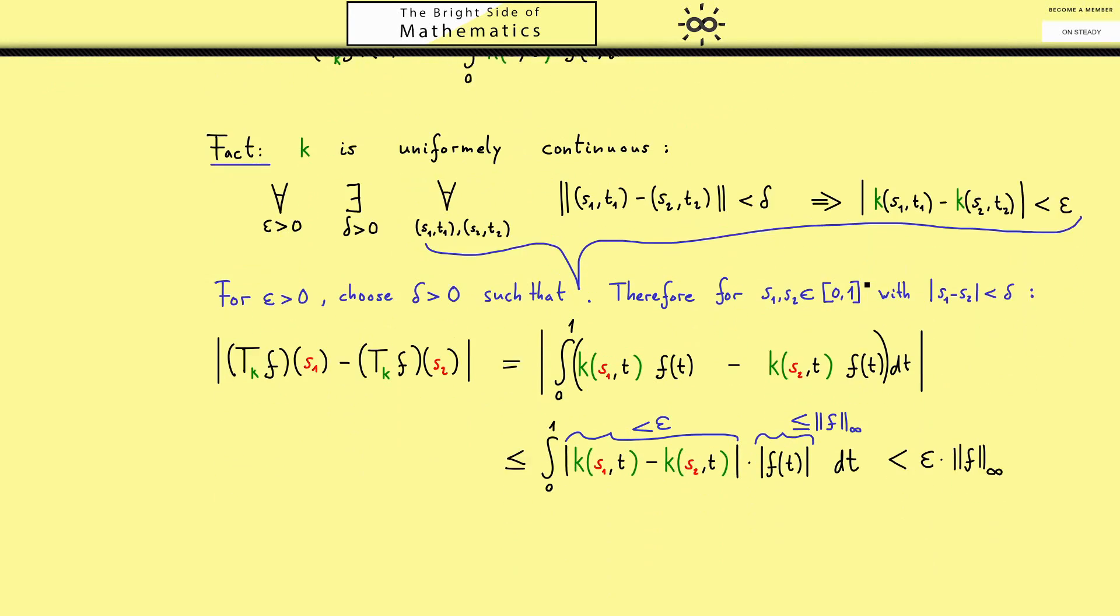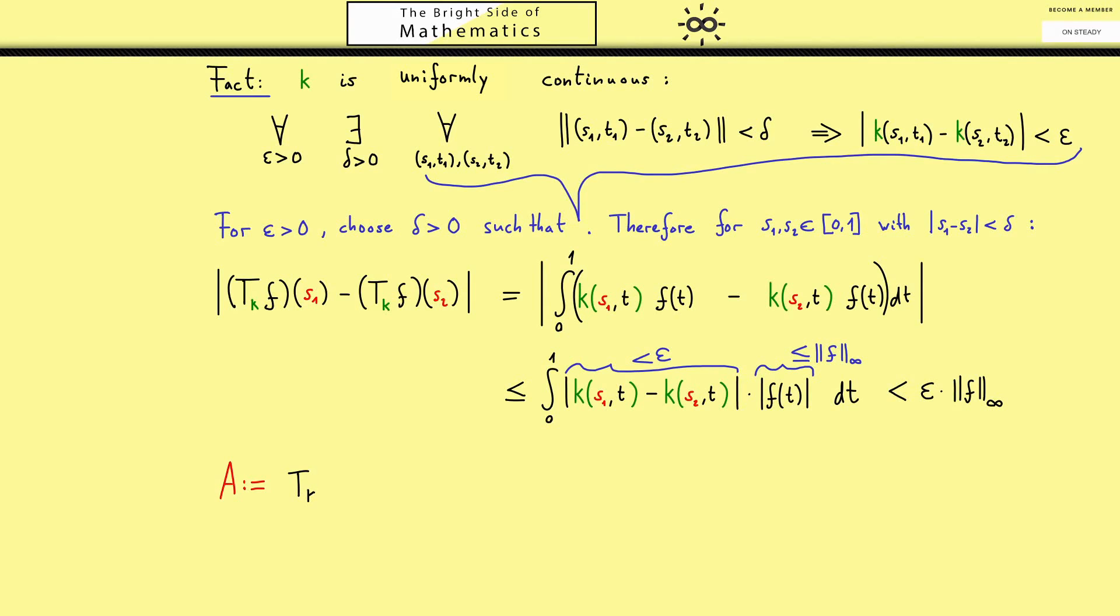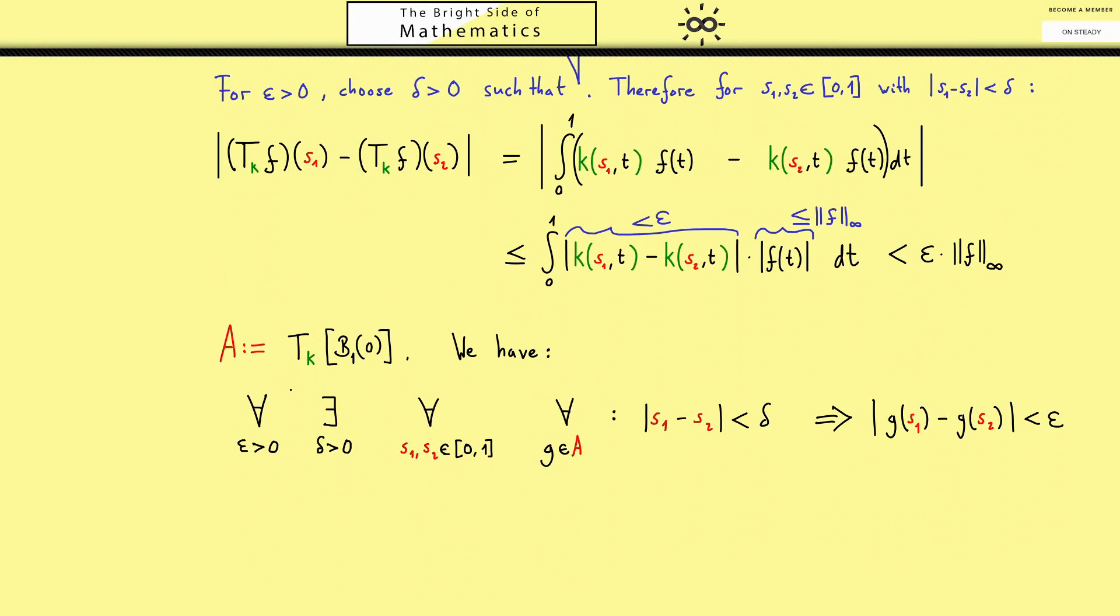So we can note our operator as written is well defined. However, our calculation shows us even more. If we define the set A as the image of the unit ball, then we see by this whole estimate that the set A is uniformly equicontinuous. It just means that for all epsilon greater zero there exists a delta such that for all s_1, s_2 and all g in A we have the uniform continuity implication. With the calculation above we have proven that A is indeed uniformly equicontinuous.